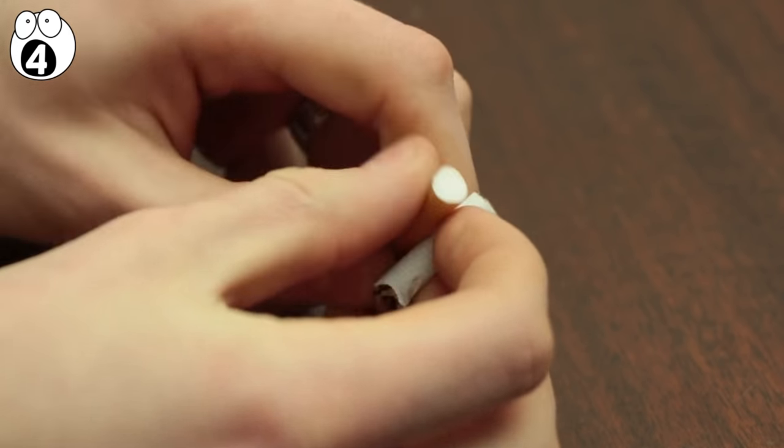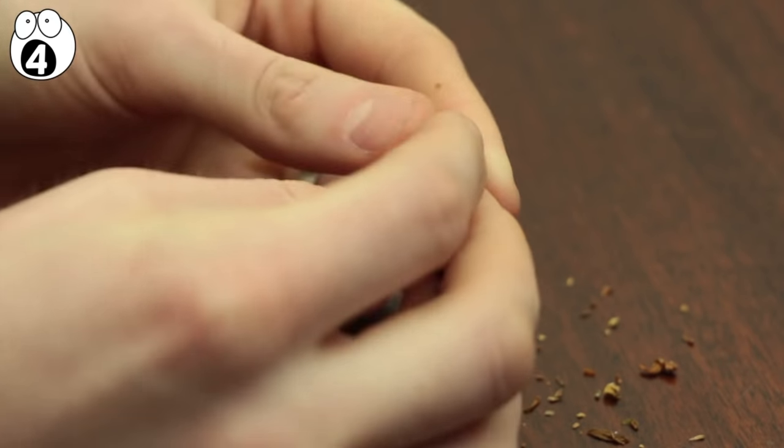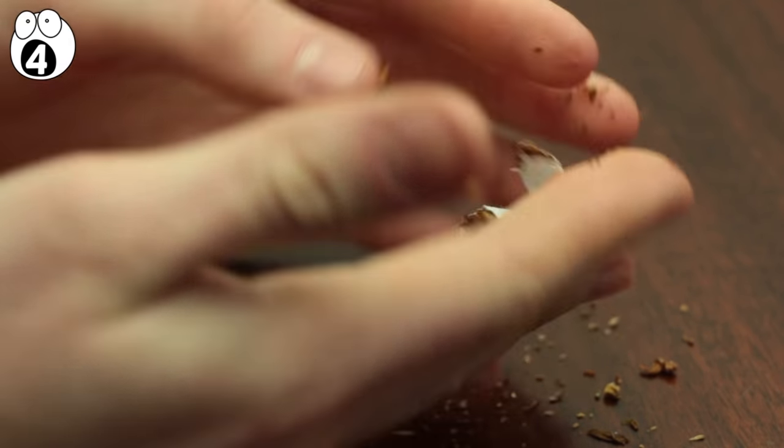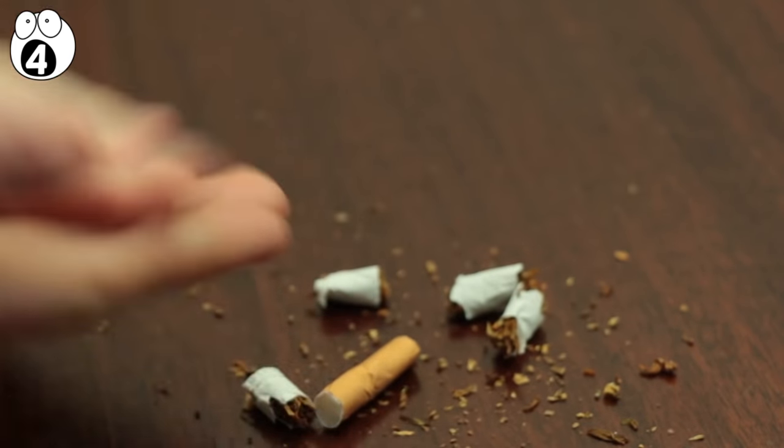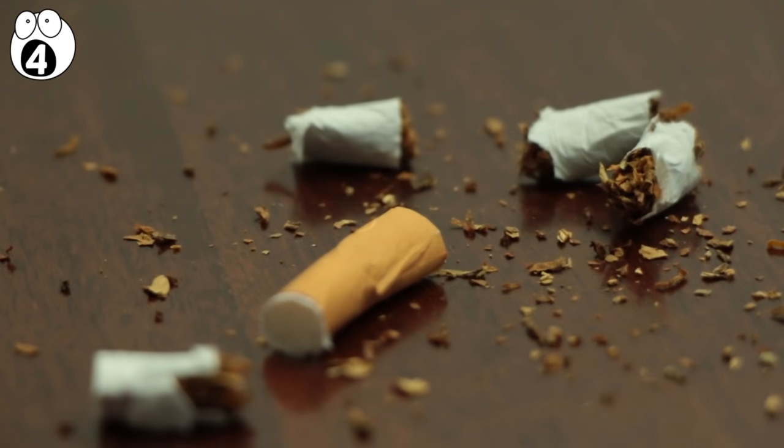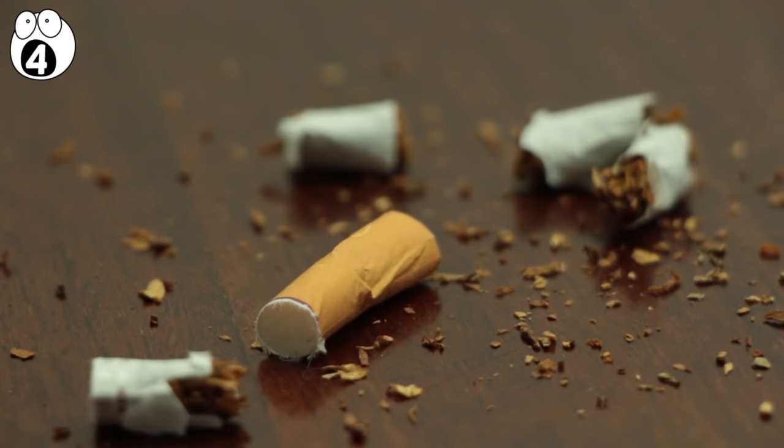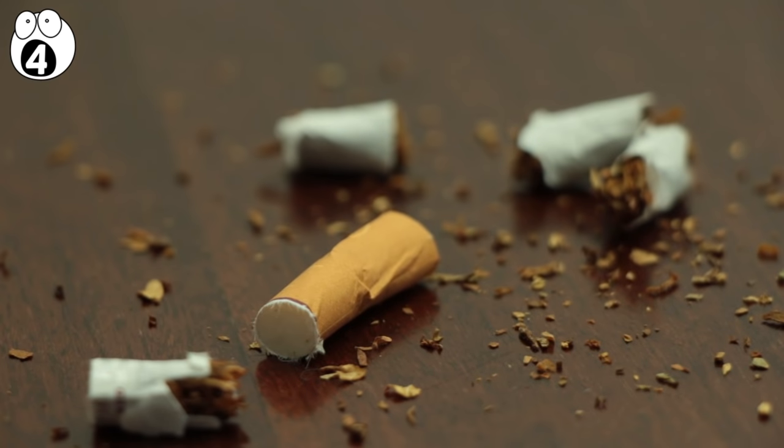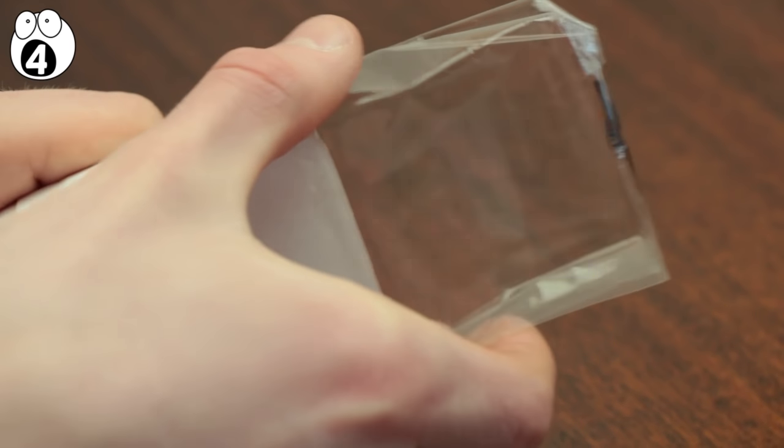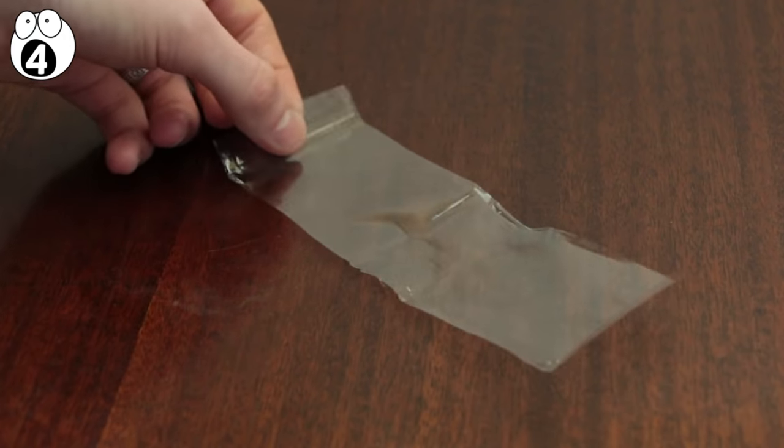You've possibly seen this one before, practiced by those odd people who are, or claim to be, able to knot a cigarette without breaking it. And then, once the knot is undone, leave the cigarette completely usable. Doesn't seem possible? Here's how it's not. Take the plastic off your box of cigarettes. Break it open and flatten it out.